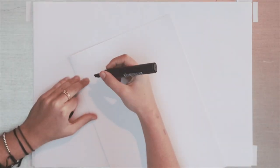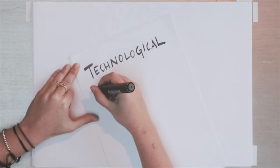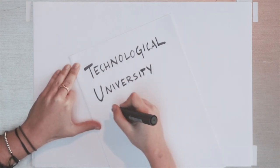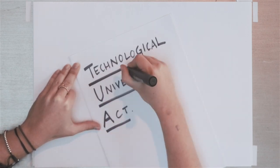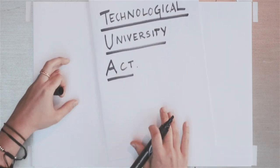As the Technological University is a new type of college, it required new legislation. And this is when the Technological University Act began its journey. The TU Act was delayed by the arrival of the general election.